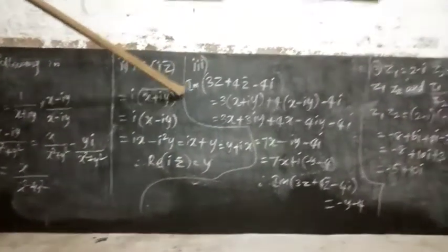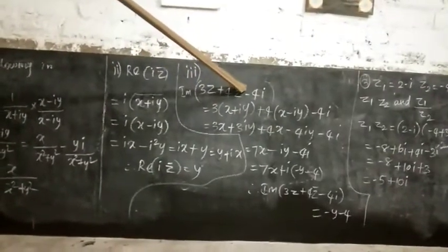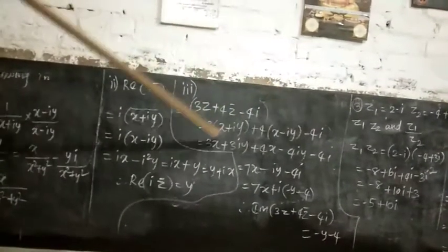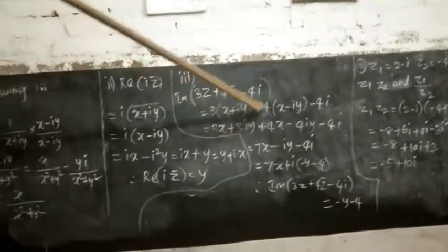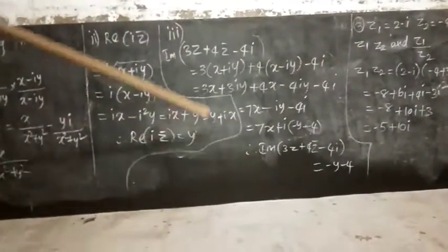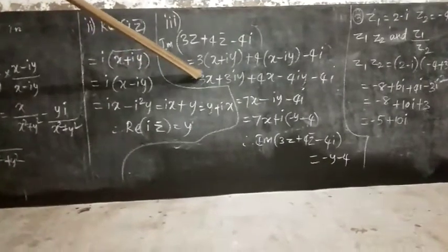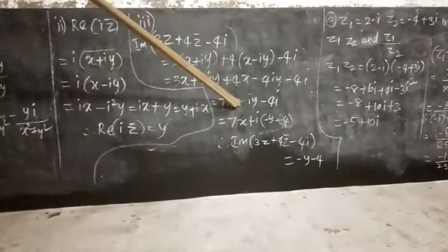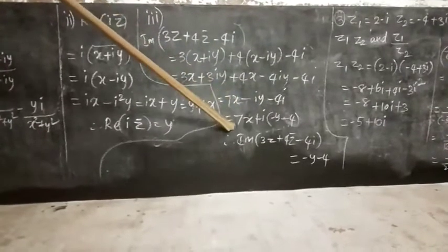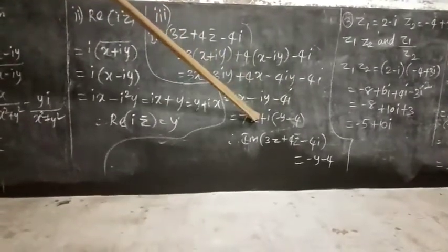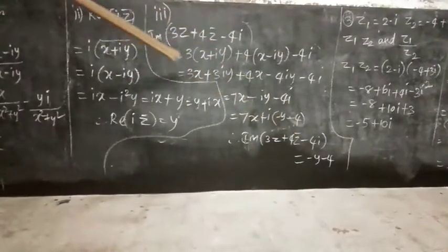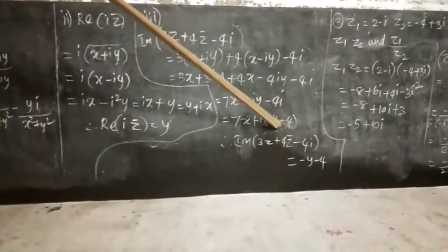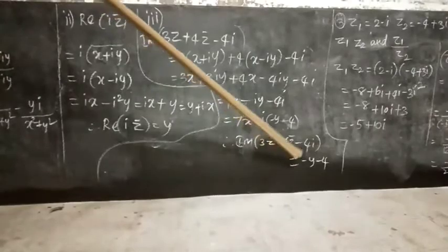Third subdivision: imaginary part of 3z plus 4z̄ minus 4i. Substituting z equals x plus iy and z̄ equals x minus iy: 3(x + iy) plus 4(x - iy) minus 4i. Expanding: 3x plus 3iy plus 4x minus 4iy minus 4i. Combining real parts: 3x plus 4x equals 7x. Combining imaginary parts: 3iy minus 4iy minus 4i equals i(−y − 4). Therefore, imaginary part of 3z + 4z̄ − 4i equals minus y minus 4.